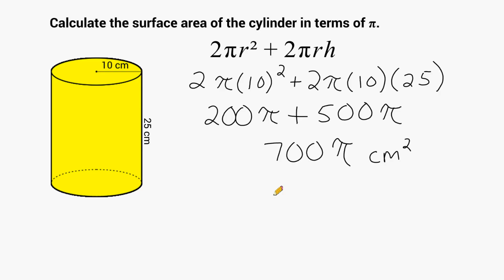Now, let's say you had to use 3.14 for pi. Well, then you would just take 700 and multiply that by 3.14. And that's all there is to it. We quickly figured out the surface area of the cylinder in terms of pi.